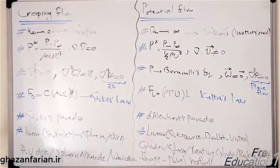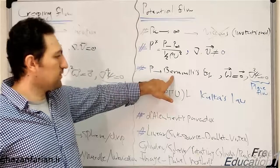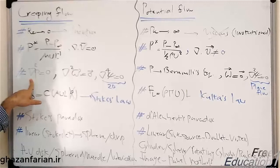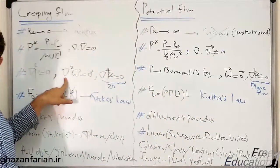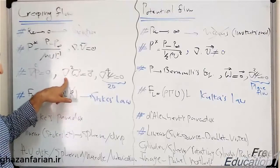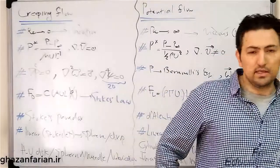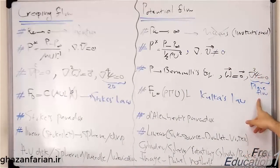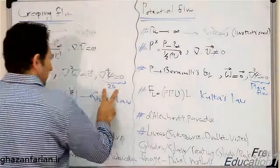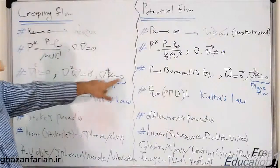In creeping flow, the governing equation for pressure is the Laplace equation. Because potential flow is irrotational, the vorticity vector is zero; but in creeping flow, the governing equation for vorticity is also the Laplace equation, obtained by neglecting inertia terms and taking the curl of the Navier-Stokes equation. For the stream function in two-dimensional flows, the governing equation in potential flow is the Laplace equation, while in creeping flow it is the biharmonic equation, involving the biharmonic operator applied to the stream function.